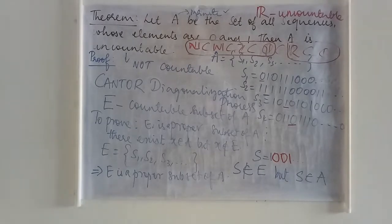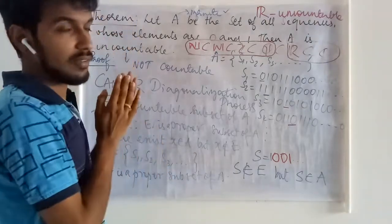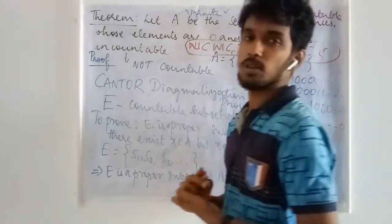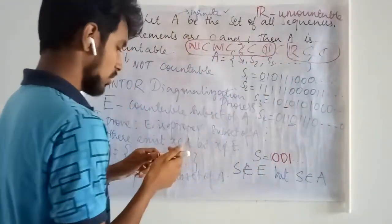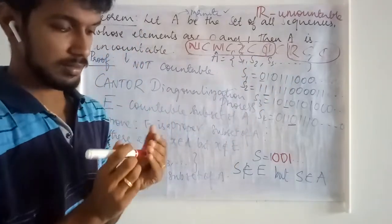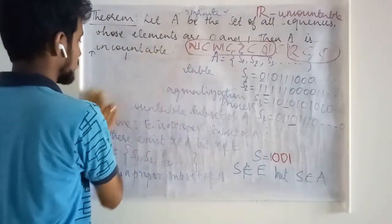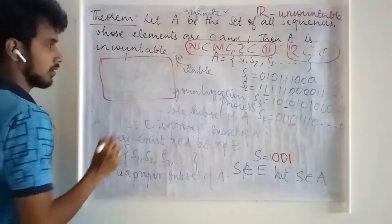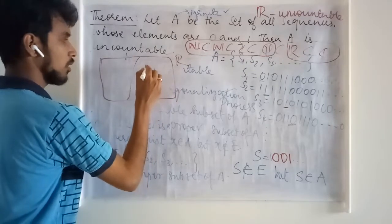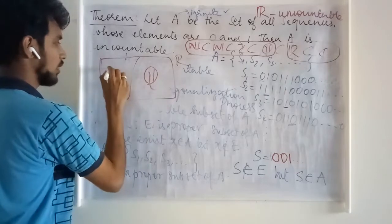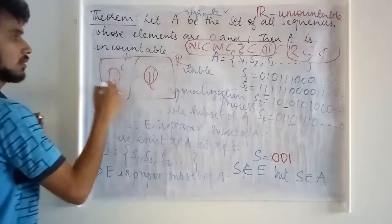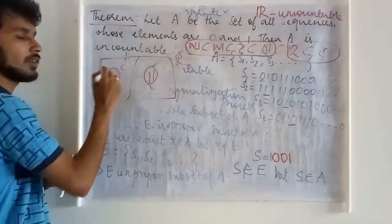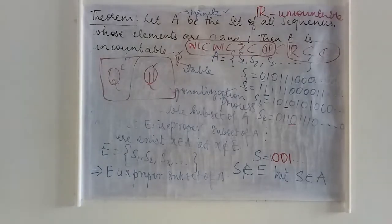I am going to give you an exercise. We have a corollary based on this: you have to prove that the set of all irrational numbers is uncountable. We have Q as a proper subset of R. If R is your entire real number set, Q is inside it, and Q complement — the irrational numbers — is everything apart from Q. We know R is uncountable and Q is countable. You have to prove that Q complement is uncountable.